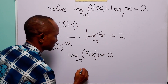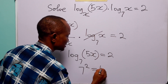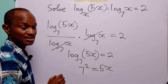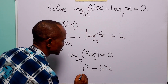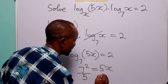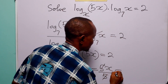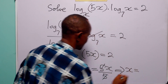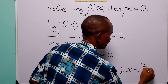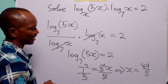From here, 7 raised to power 2 is equal to 5x, and dividing both sides of this equation by 5, we have that x is equal to 49 over 5.